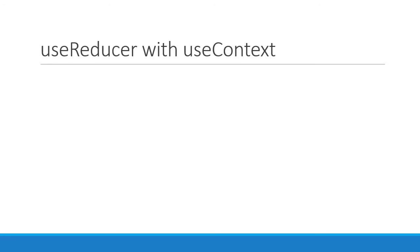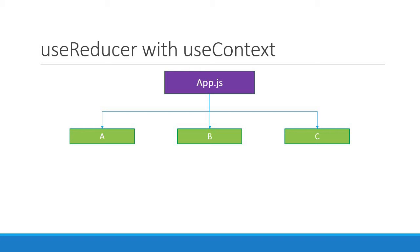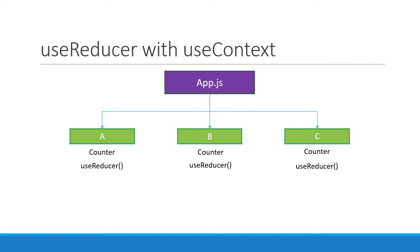Let me explain the scenario in simple terms. Consider an application with lots of components. We have app.js which is the root component, and nested inside app.js we have components A, B, and C. Let's say each of these components maintains their own counter. We've already seen how to implement a counter using the reducer hook, so in each of the three components we make use of useReducer and implement a counter.